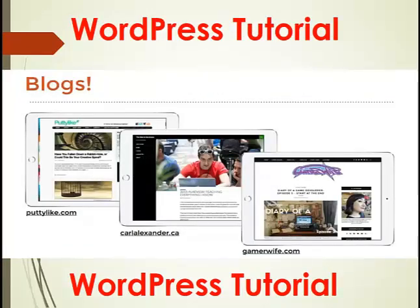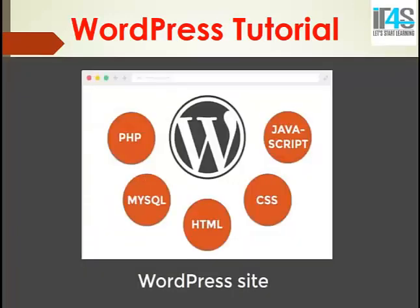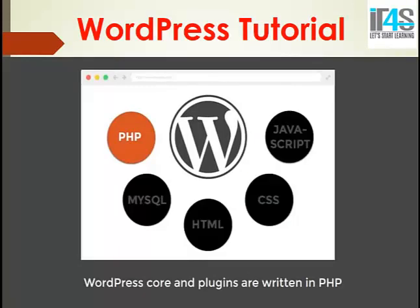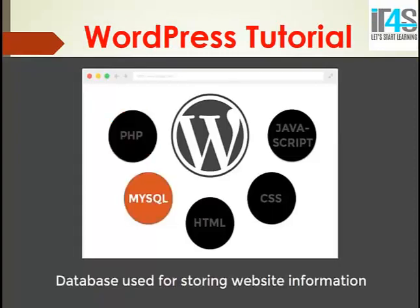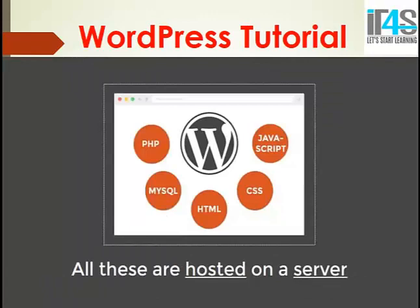And open source. Here are some examples of blogs and websites which we'll create in our future videos. A WordPress site basically includes PHP, MySQL, HTML, CSS, and JavaScript. PHP holds the WordPress core and other plugins written in PHP. MySQL is used for storing the information of users. HTML, CSS, and JavaScript are used for front-end development, and all these are hosted on servers like local server or web servers.